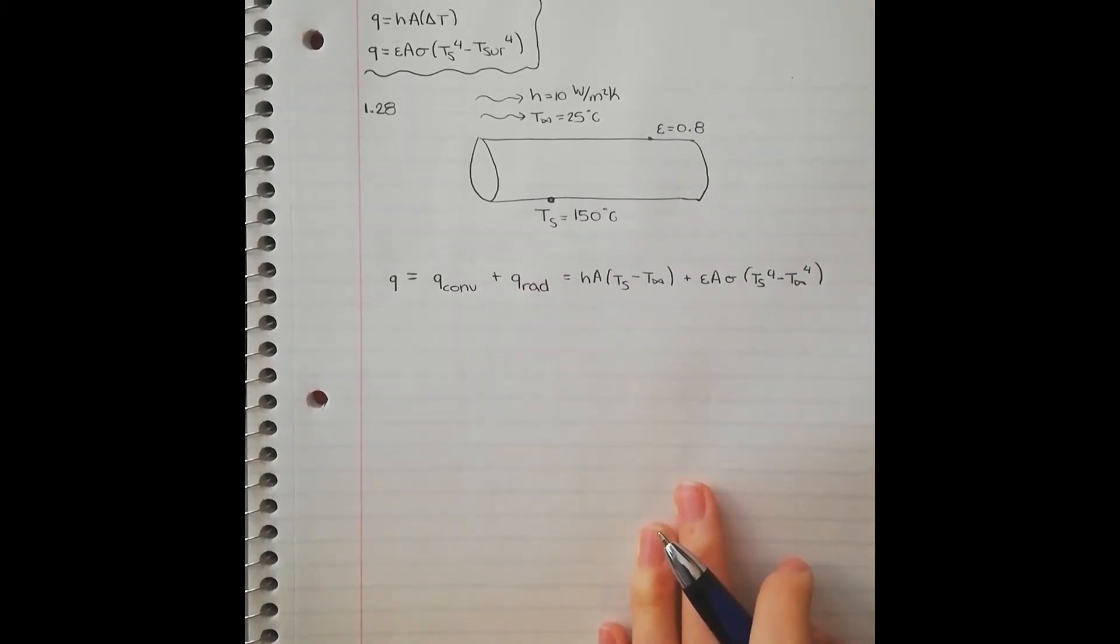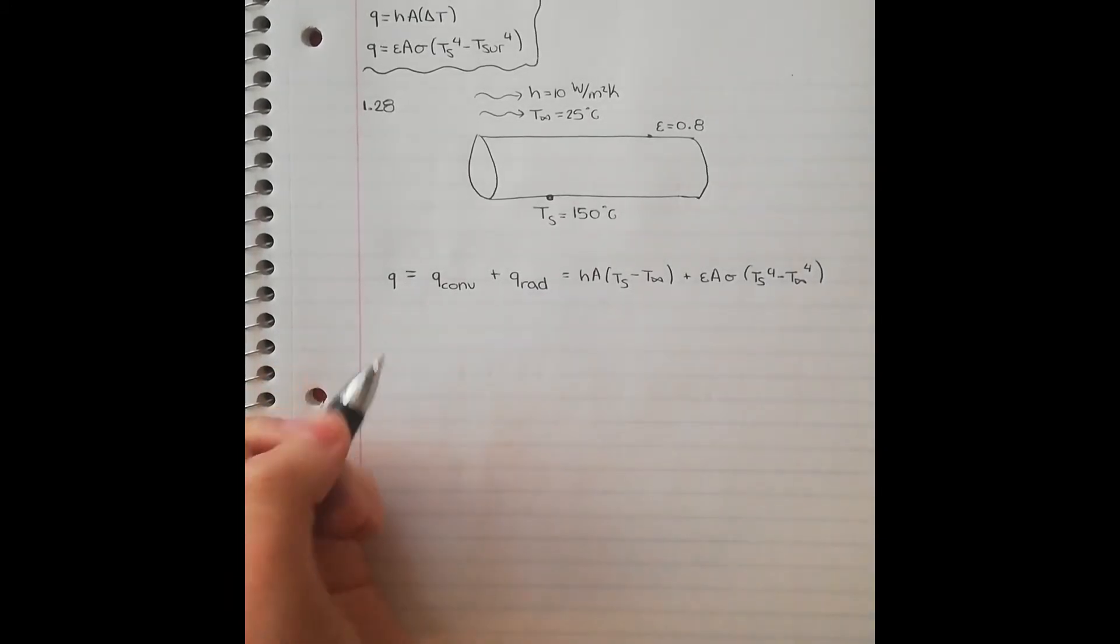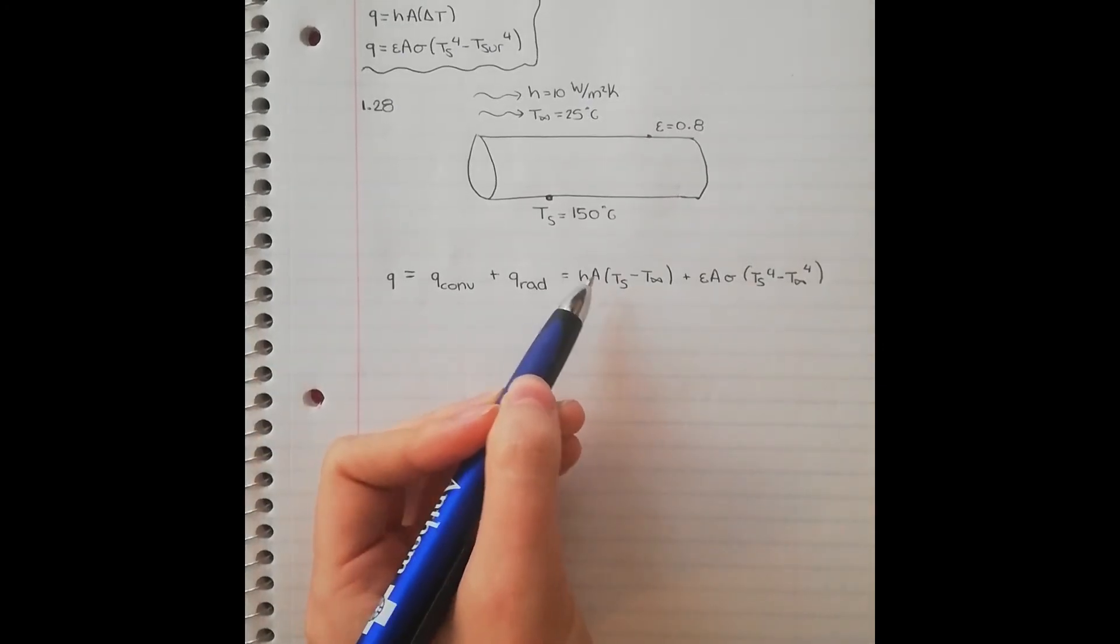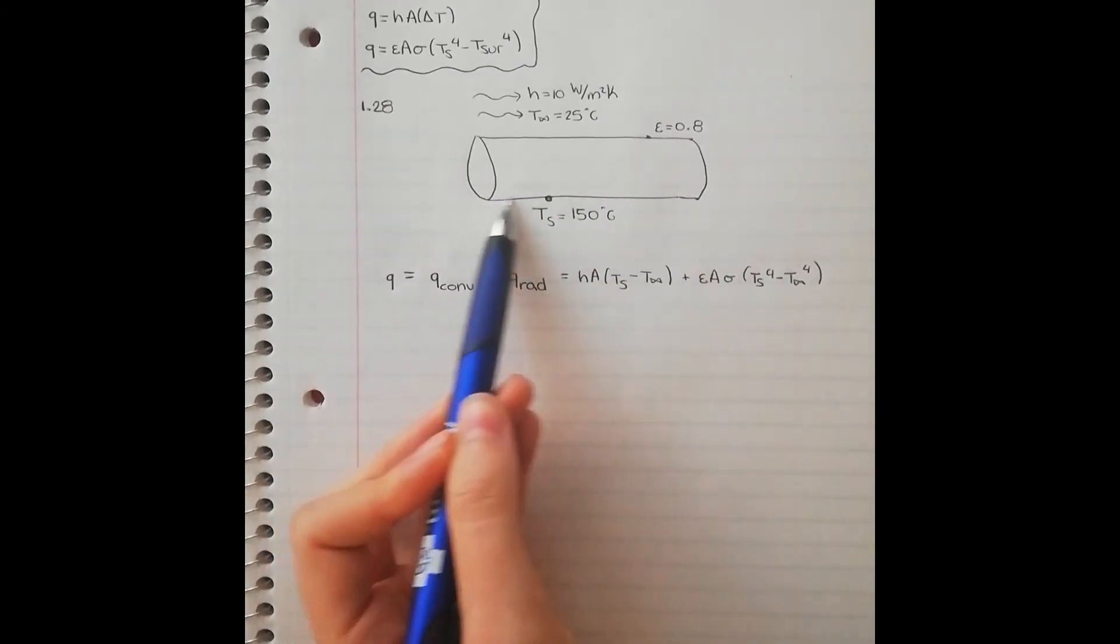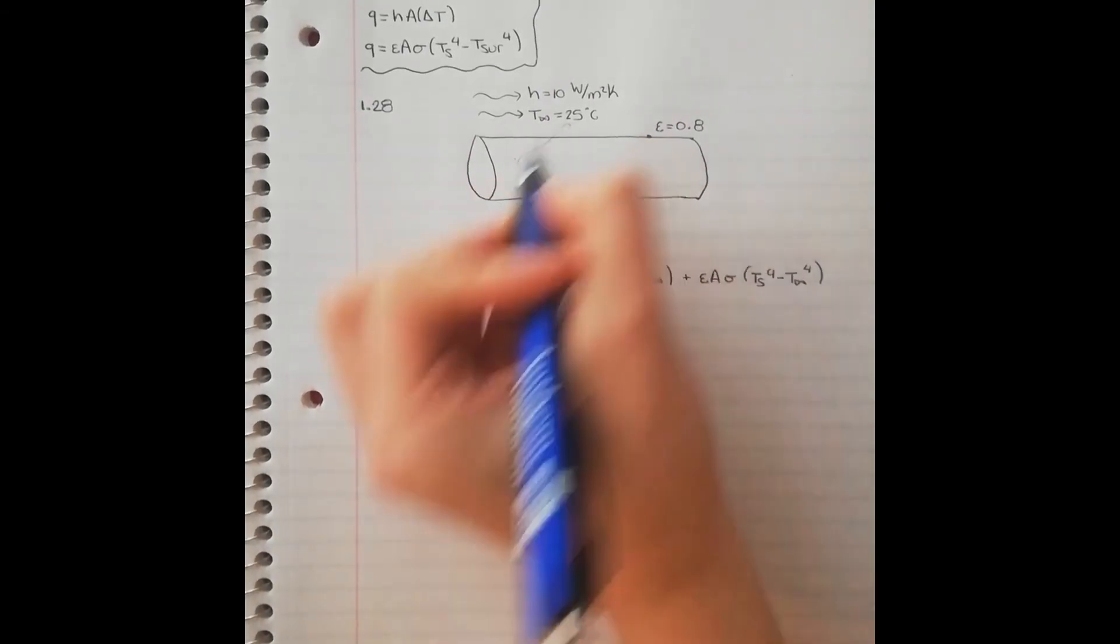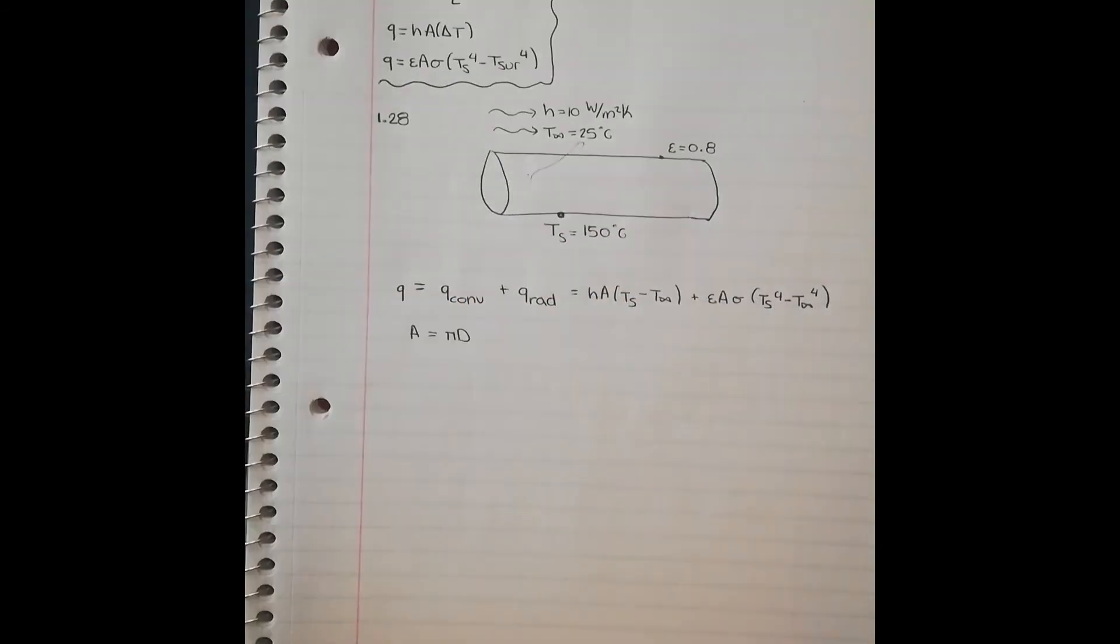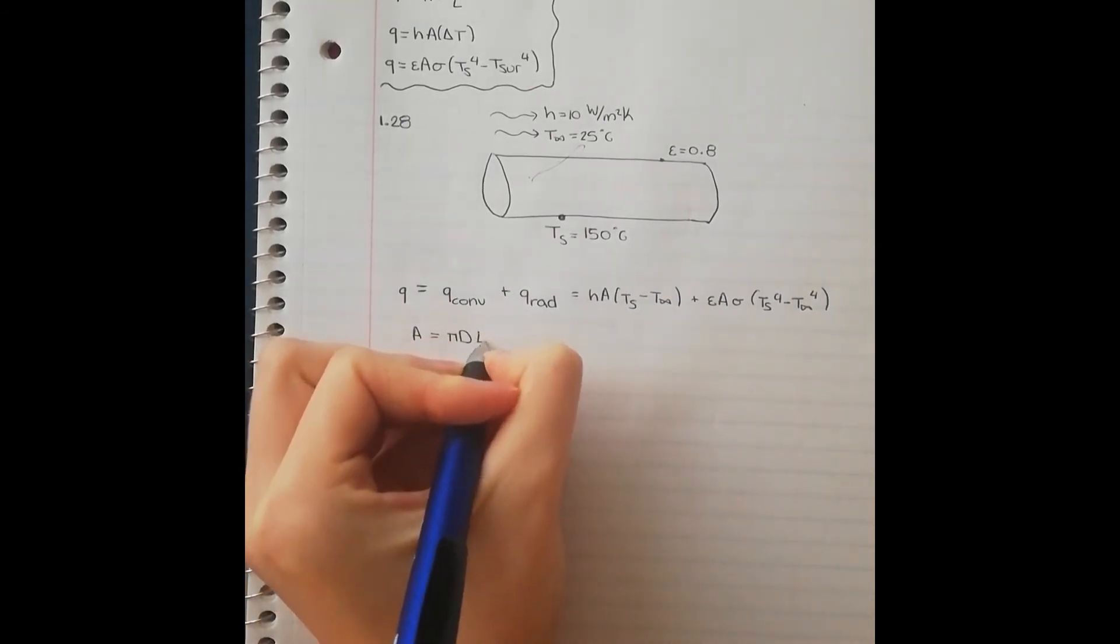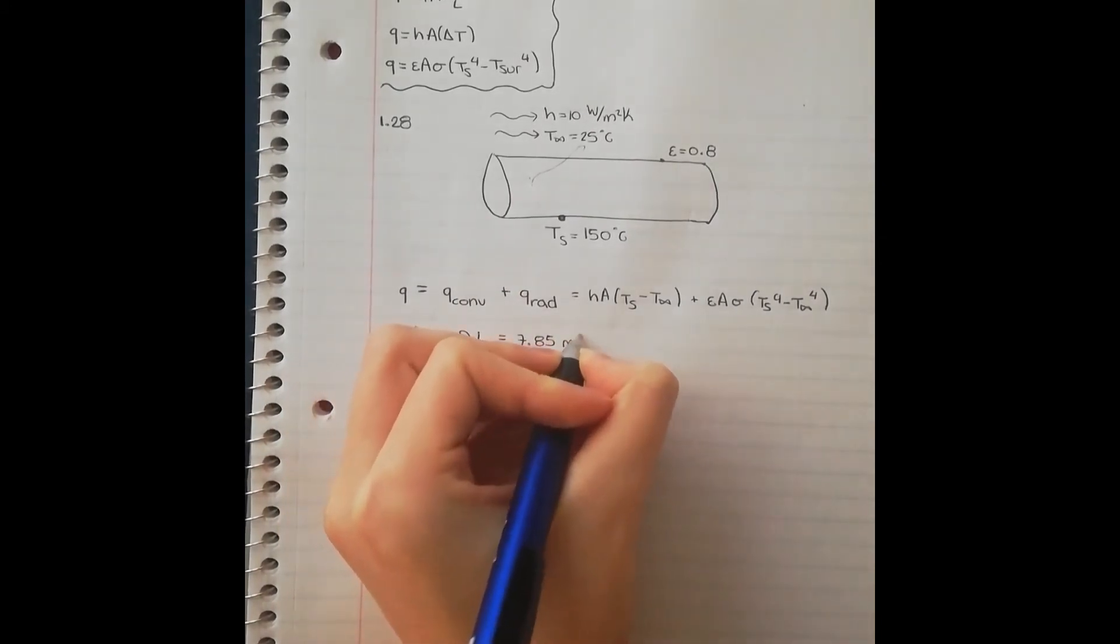Now, we know everything, and we can solve for Q. We start out by finding the area. So, you know that the area, this area, has to be the area through which heat is being transferred. And so, in this case, this pipe is long and it's not insulated, which means that the heat is going to flow out of the surface of the pipe. So we have to find the surface area around the pipe. So we write this area as pi diameter times length. And that is going to be equal to 7.85 meters squared.